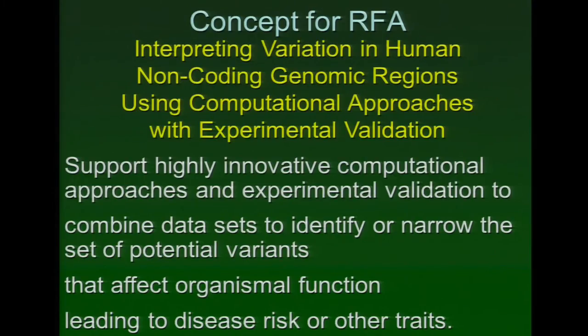Figuring out which variants actually cause organismal effect is a hard problem, so we thought it would be worthwhile to stimulate research in this area. We still need all those molecular studies — those are hugely important — but we thought we would focus on the harder problem. Computational approaches need a huge dataset base. We want a highly innovative computational approach to identify or narrow the set of potential variants. We're not trying to have groups absolutely prove that this variant causes that disease, but to narrow the set of variants to ones that potentially contain the causal variant.